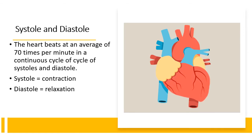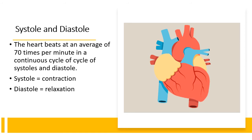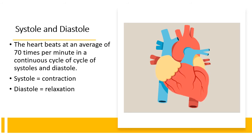Before we go into the cardiac cycle in detail, there are two key words you must know. We have the systole, which simply means contraction, and we have the diastole, which means relaxation. You should also know that the heart on average beats 70 times per minute in a continuous cycle of systoles and diastoles. That is what we are going to look at on the next slide.